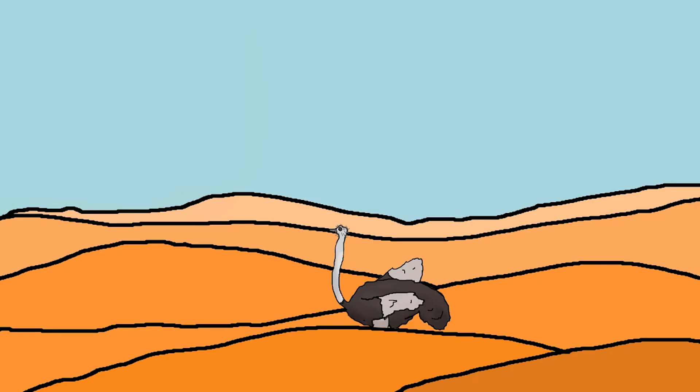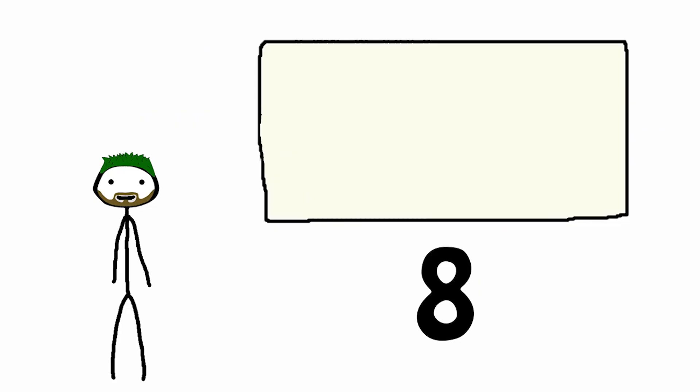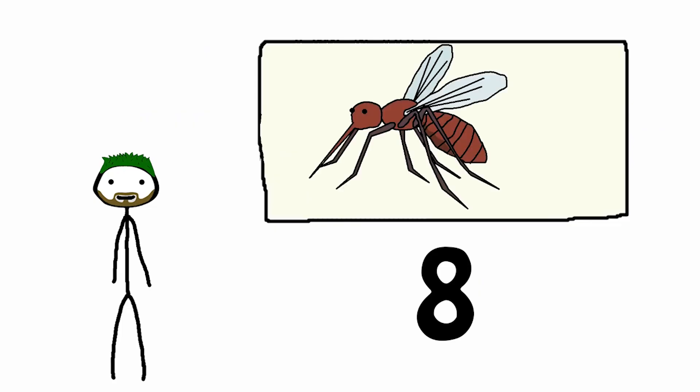This very ostrich was doing something completely different. For example, looking for grass to eat, looking for a suitable pebble in the sand which is necessary for effective digestion, lowering his head closer to the hot sand to get rid of insects, or just listening to the vibrations of the soil which report danger.